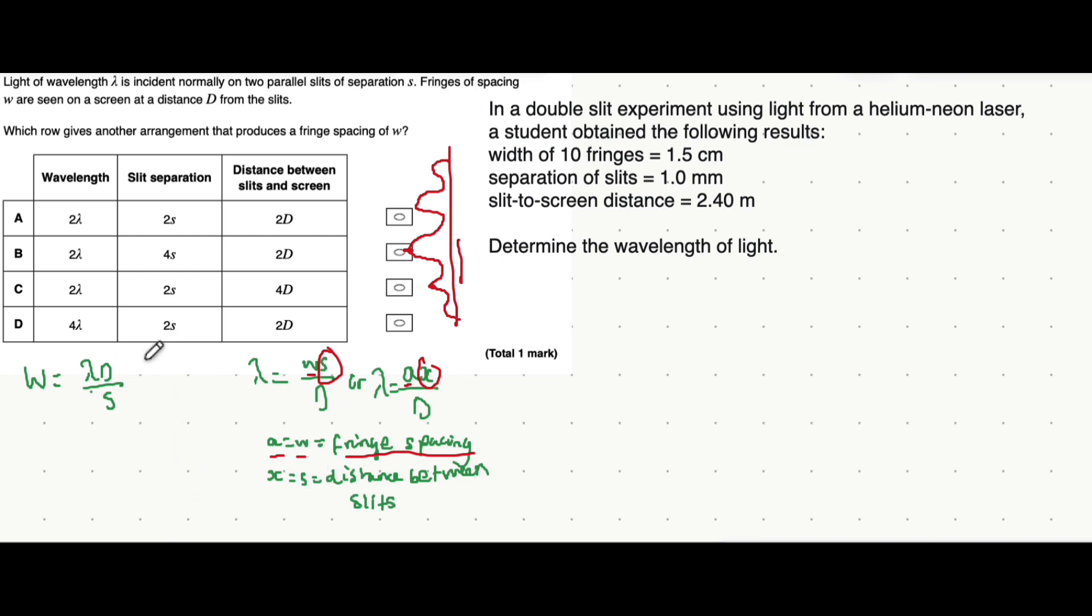Which combination of these makes it so that the fringe spacing is constant? It's actually option B, and let's go through why.